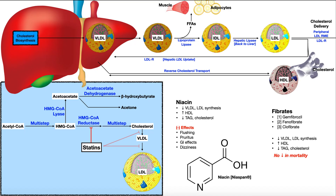Here are some other drugs that are also used, not as much, and some may not even be used anymore unless the statin is contraindicated. First, we have niacin, often called Niaspan. This is really just vitamin B3 — a prescription dose of vitamin B3. Its effects are to lower VLDL and LDL synthesis, increase HDL, and lower triglycerides and total cholesterol. The adverse effects of niacin include flushing, pruritus — which is a fancy term for itching — and GI effects and dizziness.